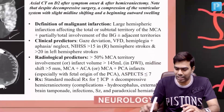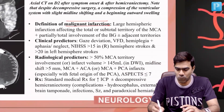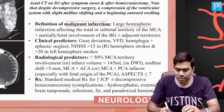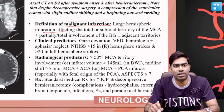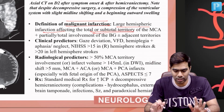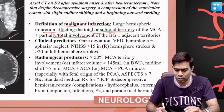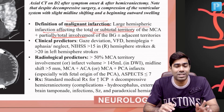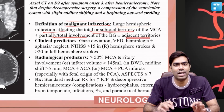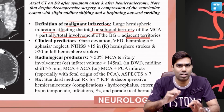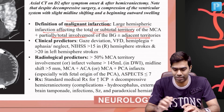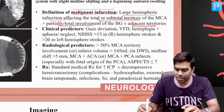The definition of malignant infarction: it is defined as a large hemispheric infarction affecting the total or subtotal territory of the middle cerebral artery, plus involvement of the basal ganglia either partially or totally, plus or minus involvement of adjacent territories such as the anterior cerebral artery or posterior cerebral artery territory.